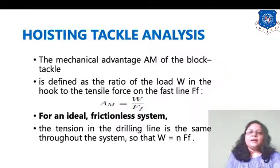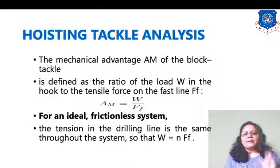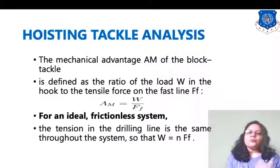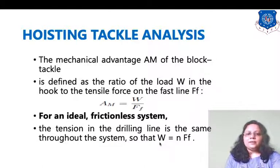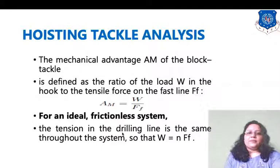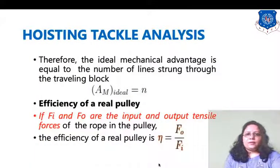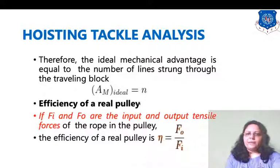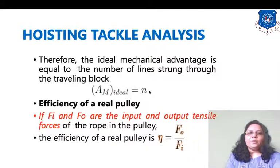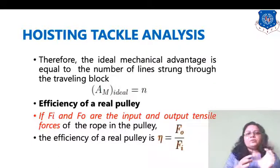In an ideal frictionless system, the mechanical advantage equals N, where N is the number of lines strung through the traveling block, and W = N × FF. In practice, friction means this ideal condition is not achievable. The ideal mechanical advantage is simply equal to N, the number of lines used.